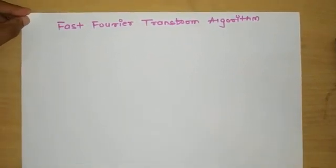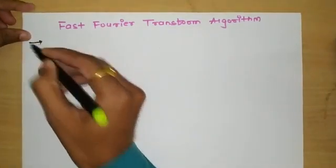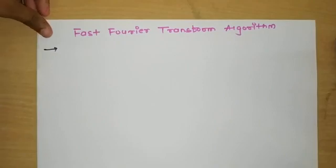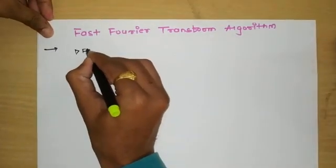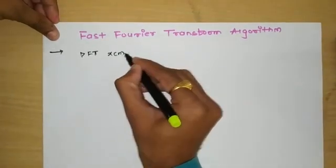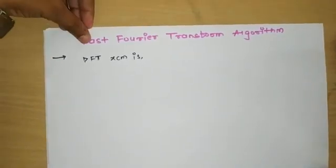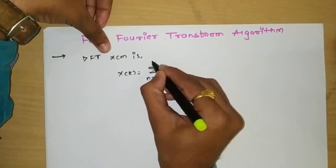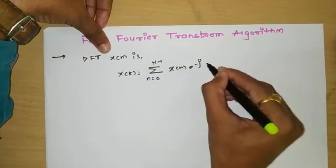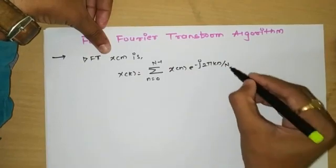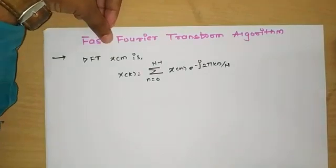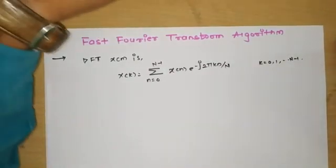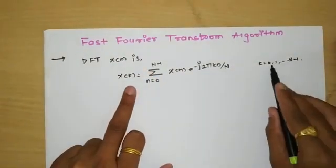In previous lectures we discussed how to find the Discrete Fourier Transform of a given sequence using formulas, that is direct computation. For a sequence x(n), the DFT is given by: X(k) = summation from 0 to N-1 of x(n) into e raised to minus j 2π kn by N. The iterations go from n = 0 to N-1, and k from 0 to N-1.